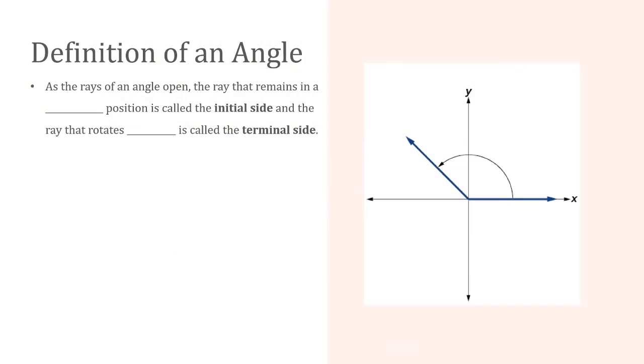As the rays of an angle open, the ray that remains in a fixed position is called the initial side. We can see that down at the positive x-axis. And the ray that rotates open is called the terminal side.